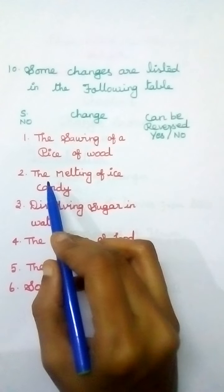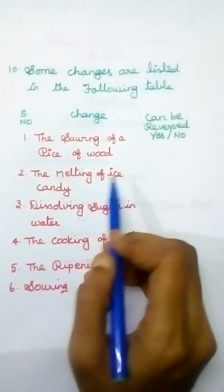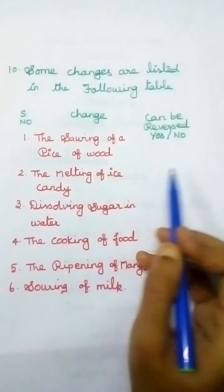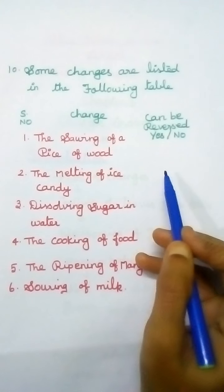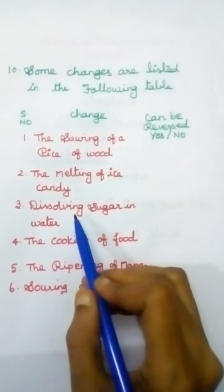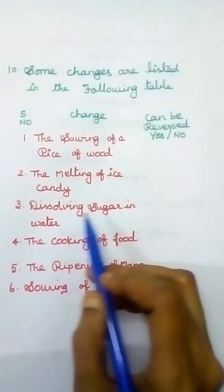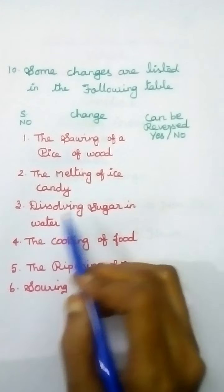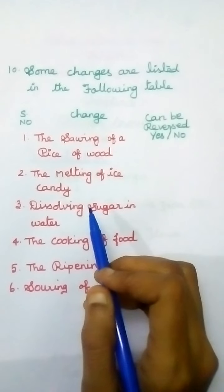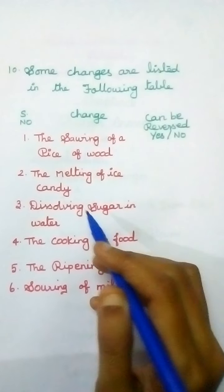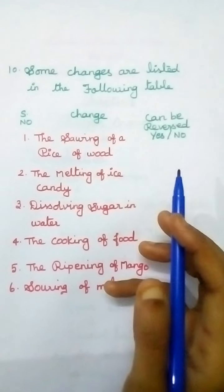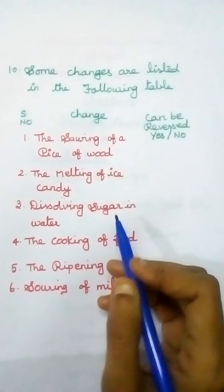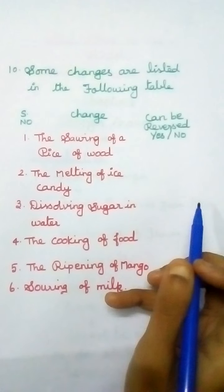Second row: the melting of ice candy. Can it be reversed? Yes or no — write the answer. Third row: dissolving sugar in water. When sugar is dissolved in water, is that reversible or irreversible? Write the answer.